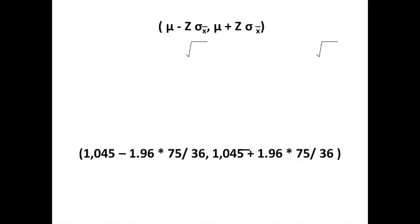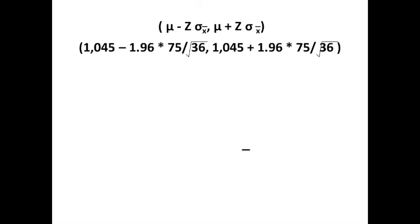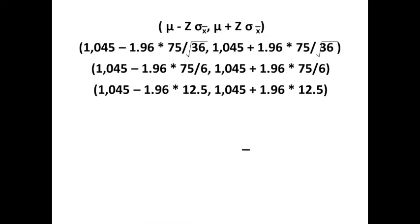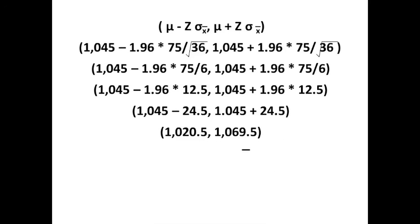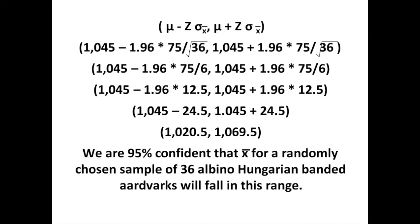We are going to go through this formula a little bit at a time. We start out with our basic formula that Mu minus Z times Sigma X bar and Mu plus Z times Sigma X bar. We now plug in values. Note that Sigma X bar is translated to 75 divided by the square root of 36. We take the square root of 36 which is 6. We divide 75 by 6 to get 12.5. We take 1.96 and multiply it by 12.5. We now have our confidence interval of 1,020.5 as a lower bound and 1,069.5 as an upper bound. We are 95% confident that X bar for a randomly chosen sample of 36 albino Hungarian banded aardvarks will fall in this range. Aren't you clever?